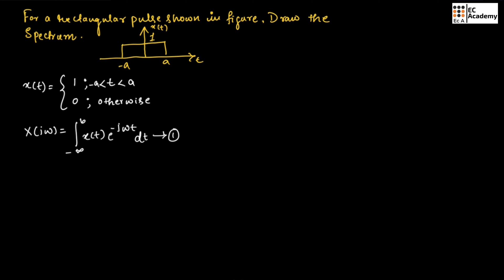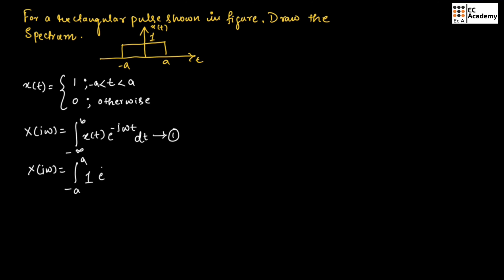Now let us substitute in place of x(T) as 1, and change the range of integration from minus A to A. Since x(T) equals 1 for T ranging between minus A to A, we change the limits of integration to minus A to A and put 1 in place of x(T). Therefore, X(jω) equals the integration from minus A to A of 1 times exponential to the power of minus jωT dT. Let us call this equation number 2.